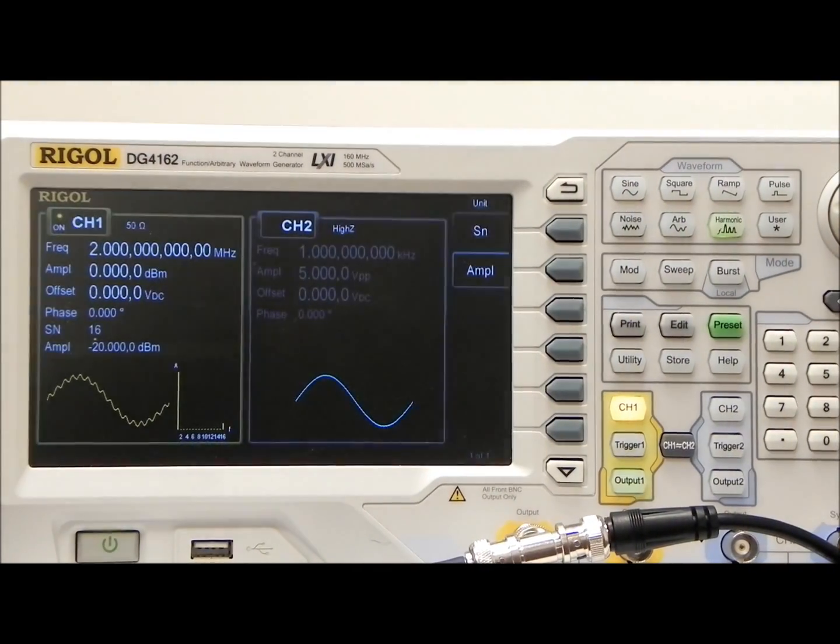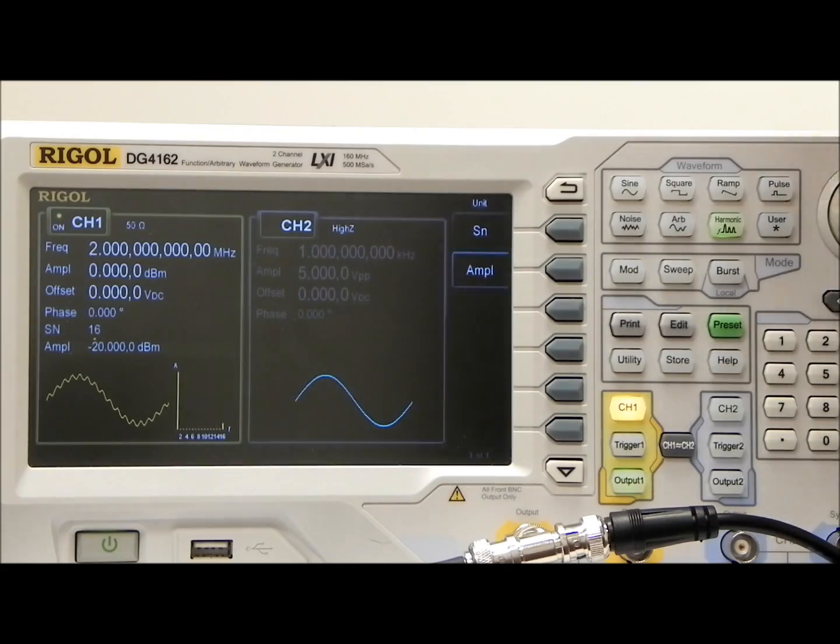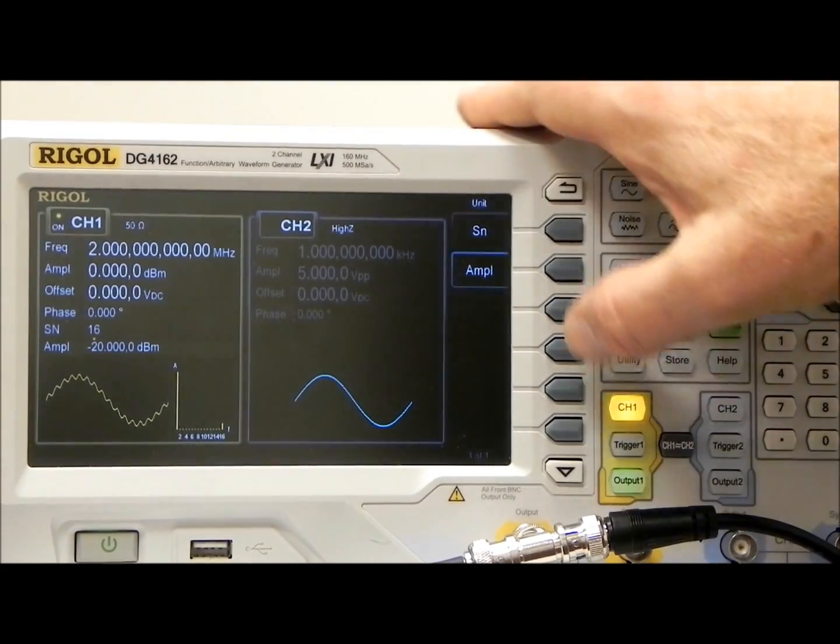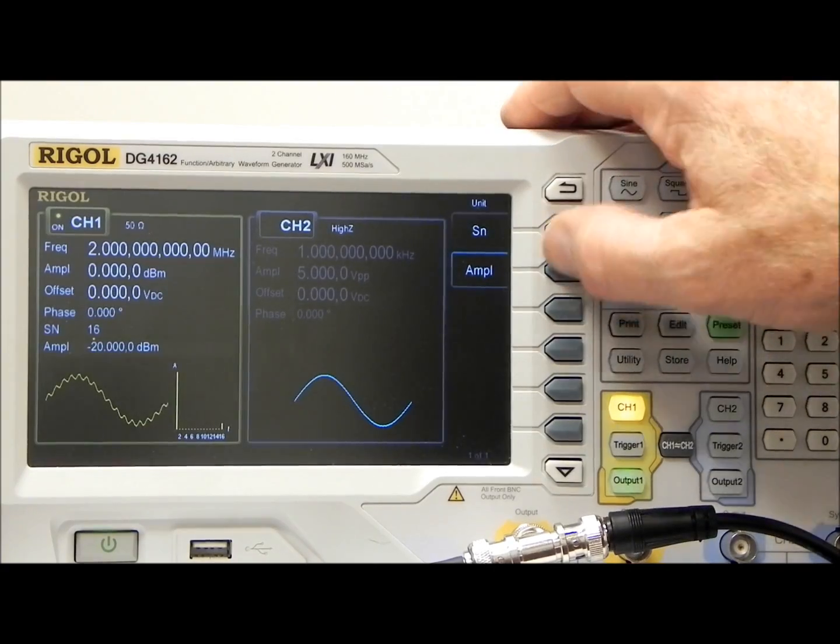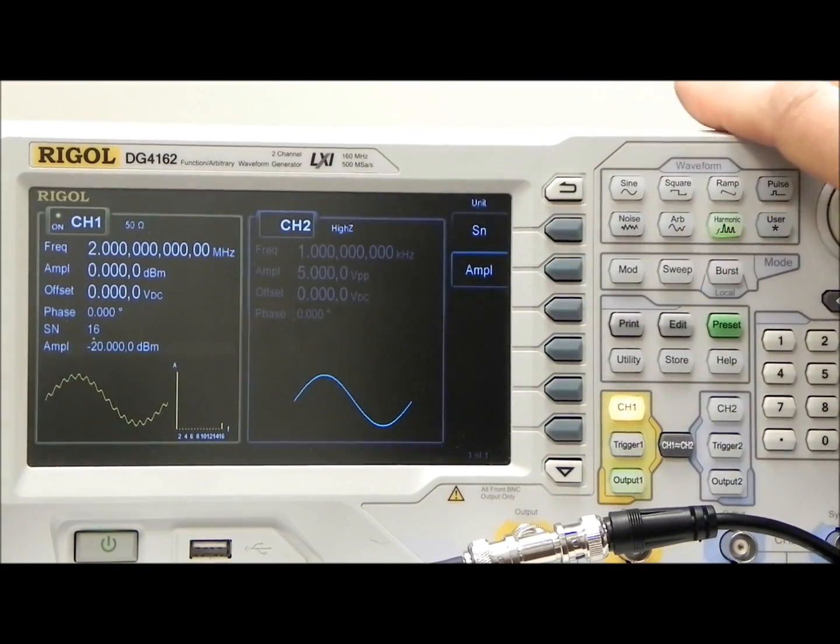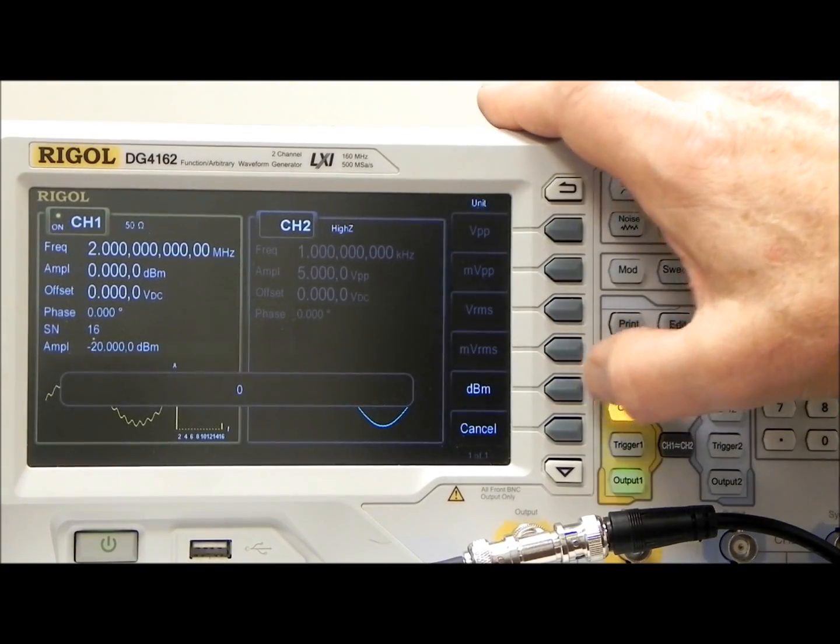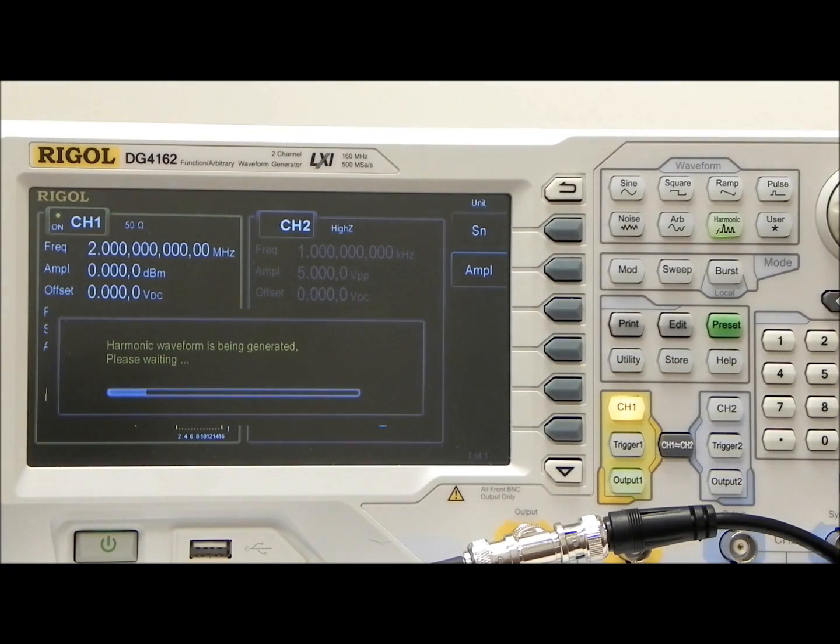I'm going to go back here and put the signal back. So simply by going into amplitude and then say 0 dB, the waveform comes back.